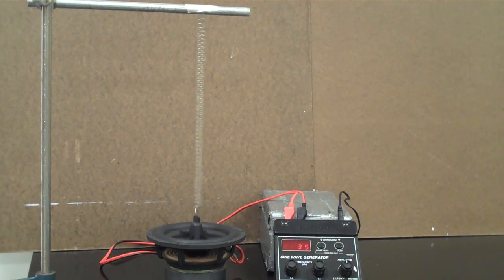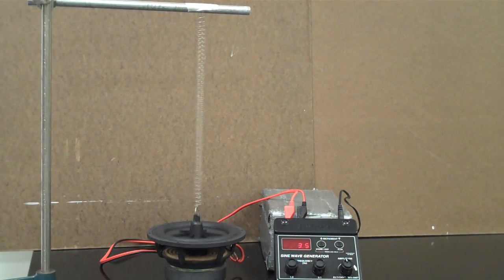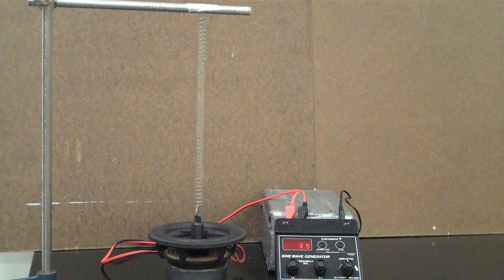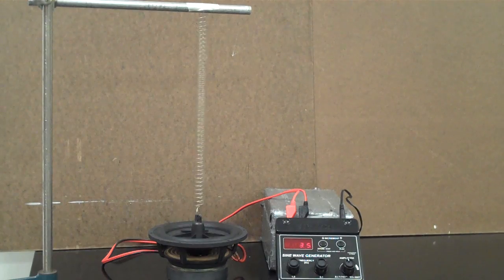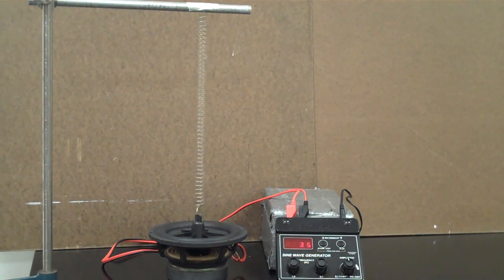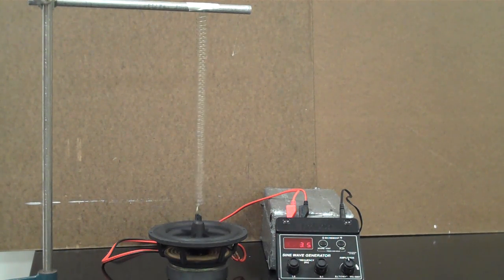Hello class, I'm here in the front of my physics classroom at the teacher's desk. What I have is a spring that's tied to a pole at one end and attached to a speaker at the other end. The speaker is attached to a sine wave generator that sends out a sine wave signal to vibrate the speaker diaphragm up and down at a given frequency.